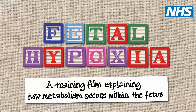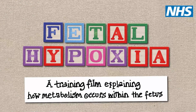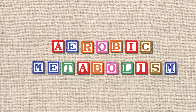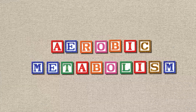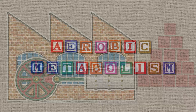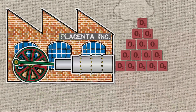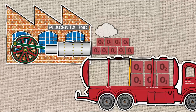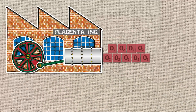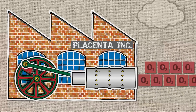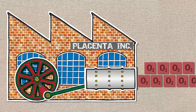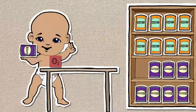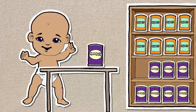This video will explain how metabolism occurs within the fetus and how this leads to acidemia. First, let's look at aerobic metabolism. In utero, a fetus is supplied with oxygen from the placenta. Fetal blood has a high oxygen carrying capacity due to the increased affinity of fetal hemoglobin to oxygen, which is where oxygen is carried. The fetus takes this oxygen and combines it with glucose to create energy.